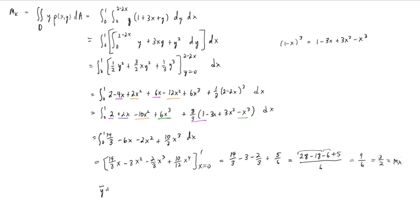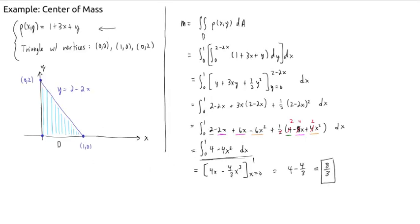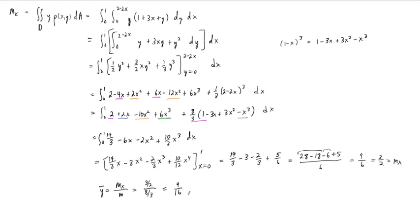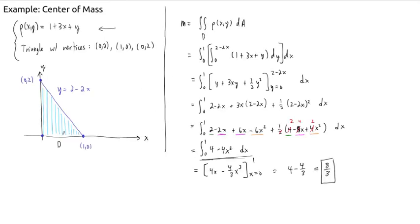So that's our moment with respect to x. Now y-bar equals M_x over m: that's (3/2) divided by (8/3), which equals (3/2) times (3/8), giving us 9/16. So the center of mass of this triangular laminar region is at (x-bar, y-bar) equals (3/8, 9/16). On the plot, 3/8 is about here on the x-axis, and 9/16 is a little over a half on the y-axis.